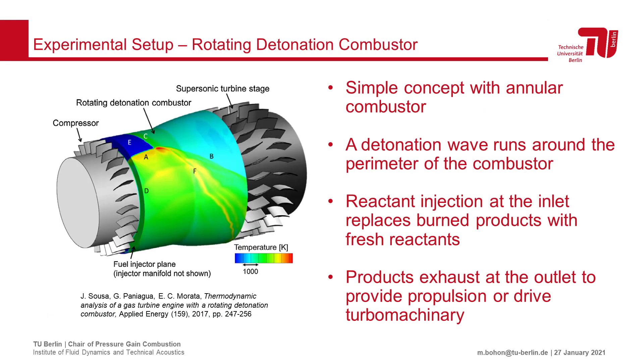The combustor design for an RDC is a very simple structure. It is composed of an annular combustion chamber, around the perimeter of which a detonation wave propagates. Reactants are injected at the head end, and products exhaust out the aft end to produce thrust or drive turbo machinery.